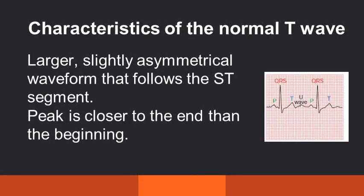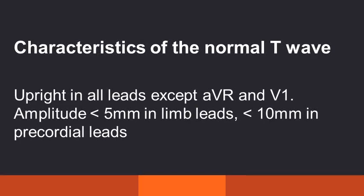So what are the characteristic features of a normal T wave? The T waves are larger, slightly asymmetrical waveforms that follow the ST segment, and the peak is closer to the end than the beginning. It is upright in all leads except AVR and V1. The amplitude is less than 5 mm in limb leads and less than 10 mm in precordial leads.